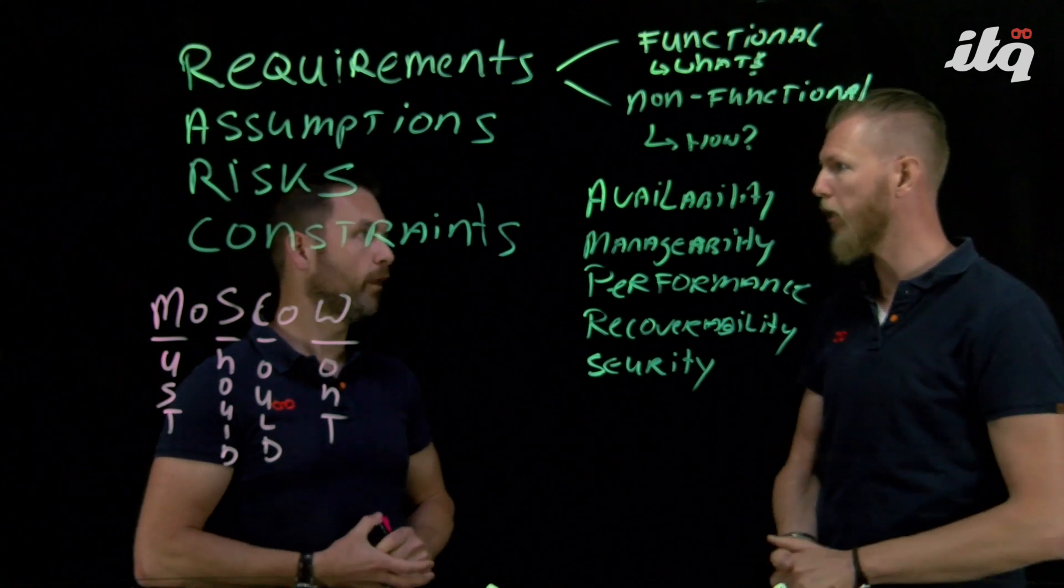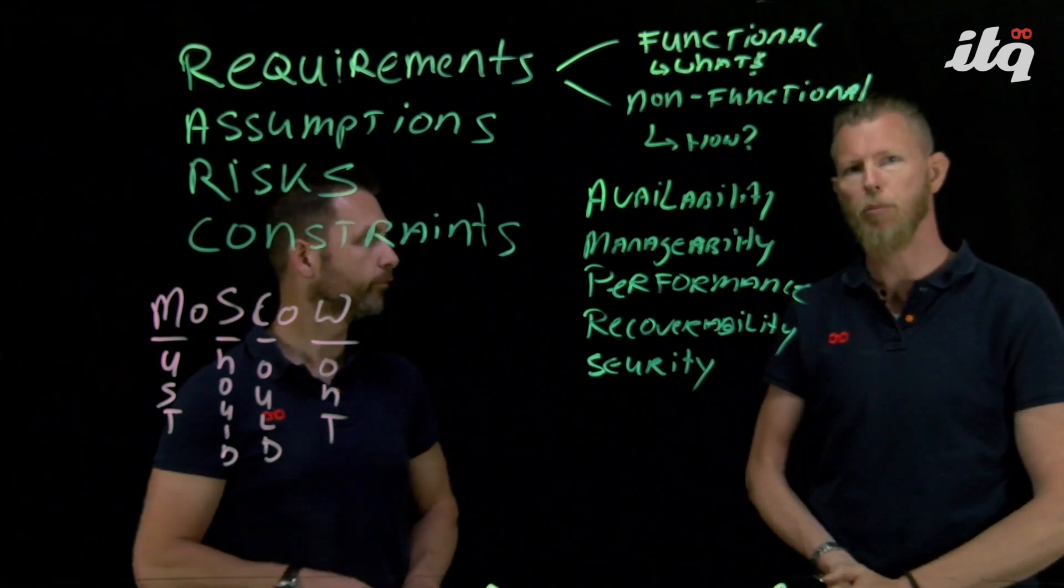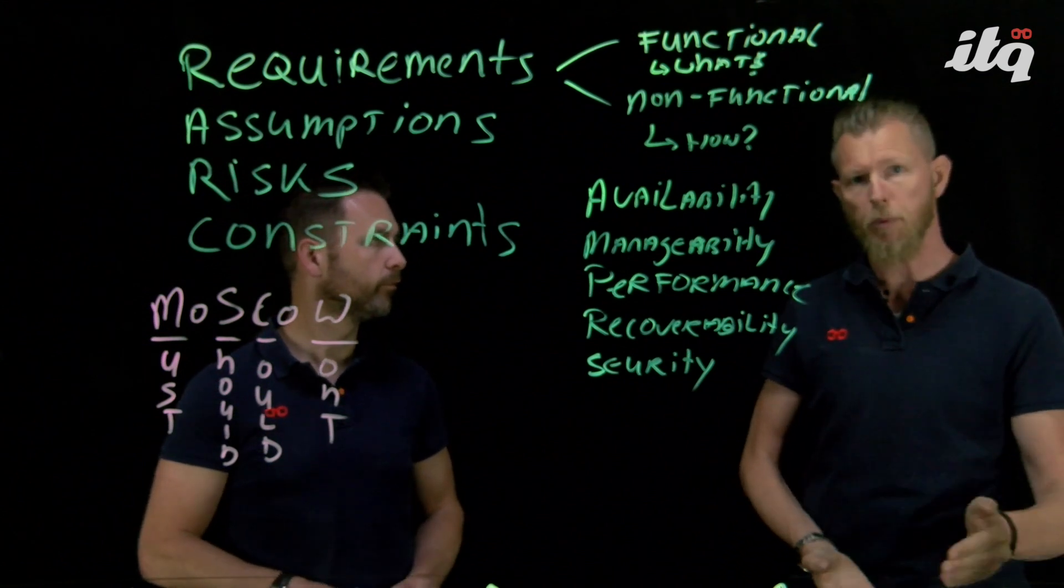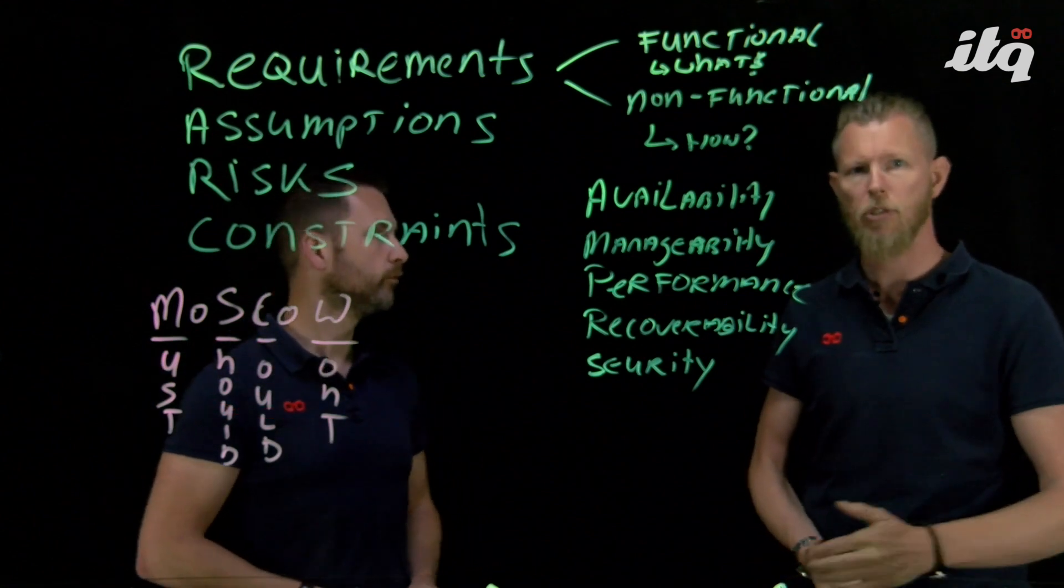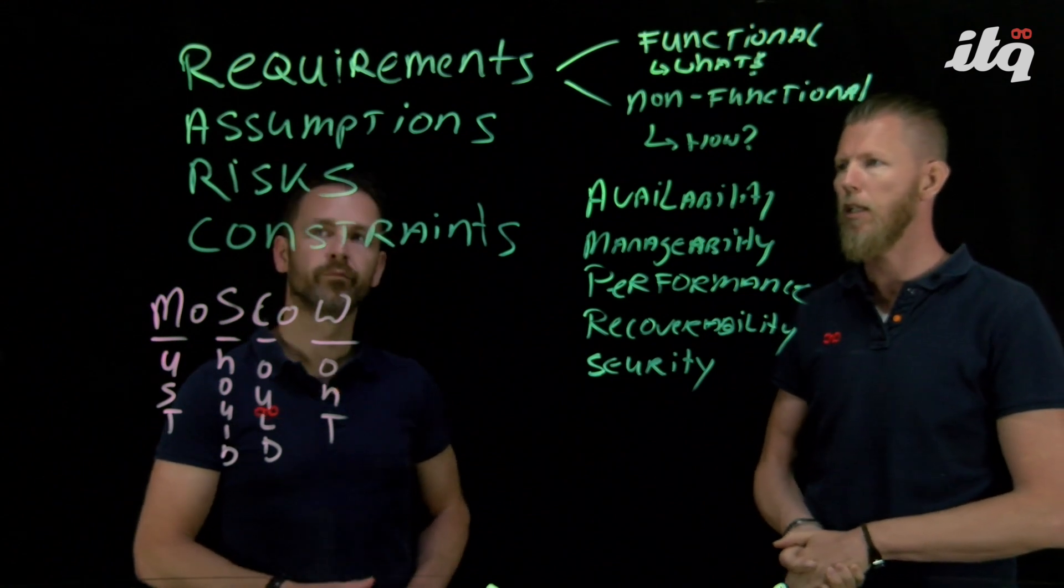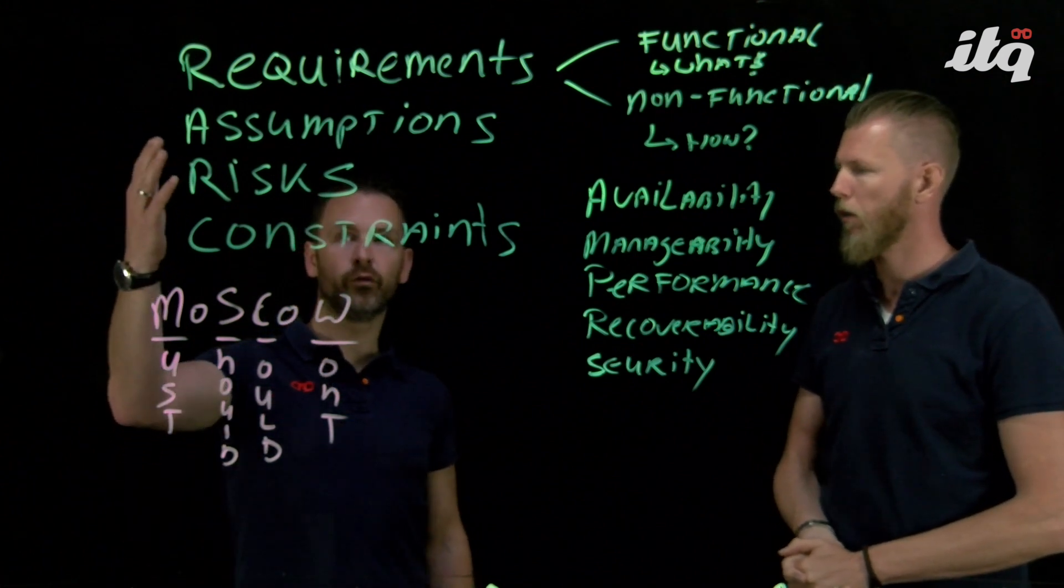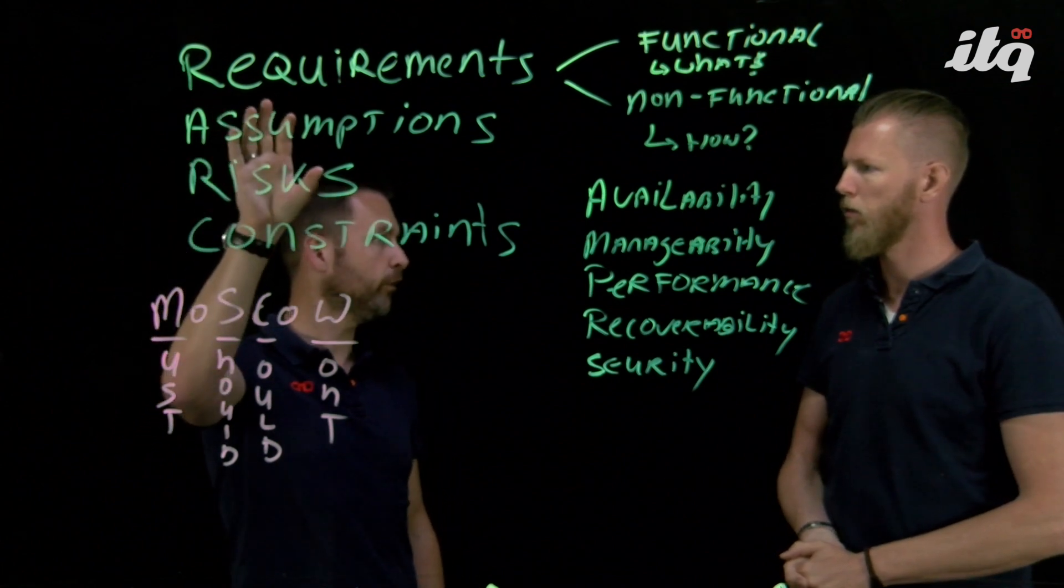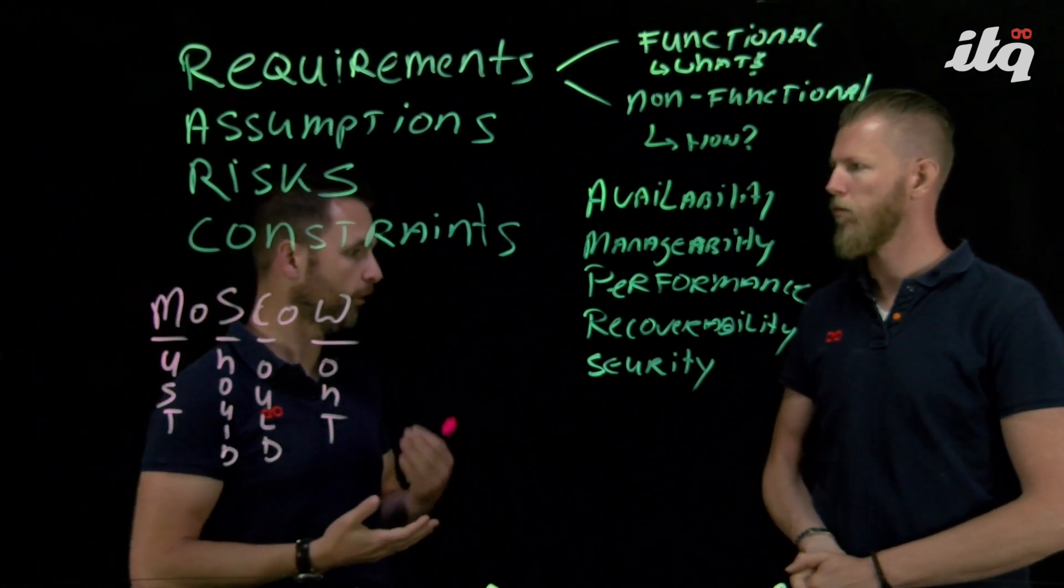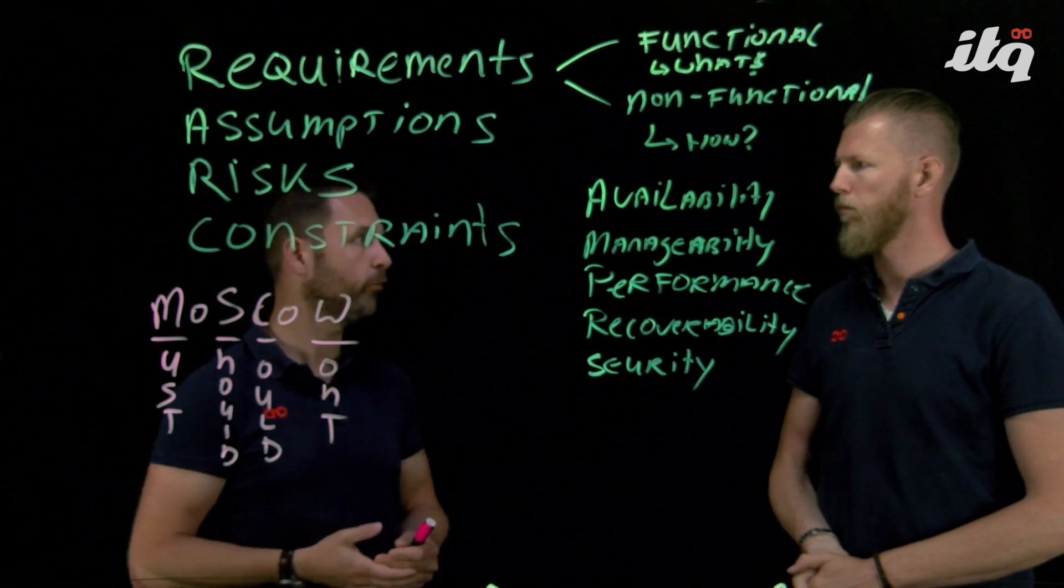You can look back at historical data, and the customer can say, we're assuming that we're going to grow 10%, 20%, 30%, but that's really something that you can't validate because it's something that's in the future. So that's a perfect example of an assumption. The risk that comes with that assumption is obviously, if growth is exceeded, it does mean something in terms of the already sized infrastructure. Every assumption that you put in your design should be also written out as a risk. What risk is introduced if we're making a false assumption? That's my golden rule. Every assumption is a risk.